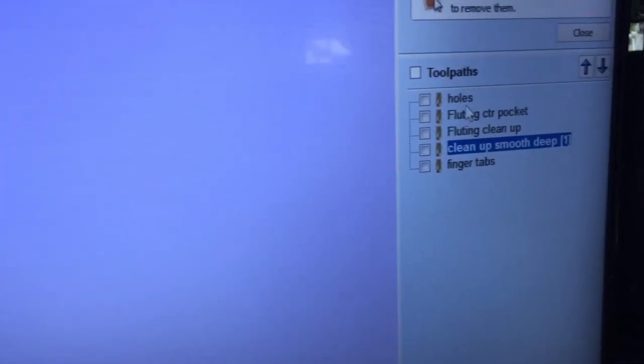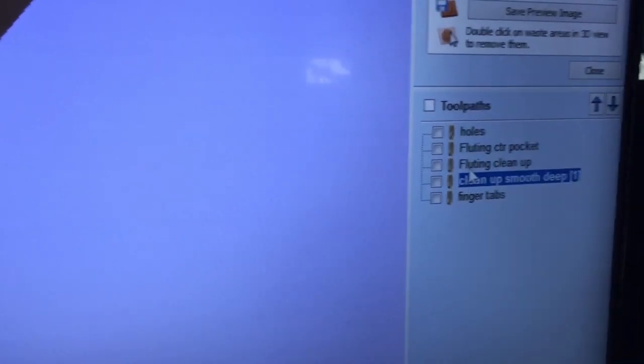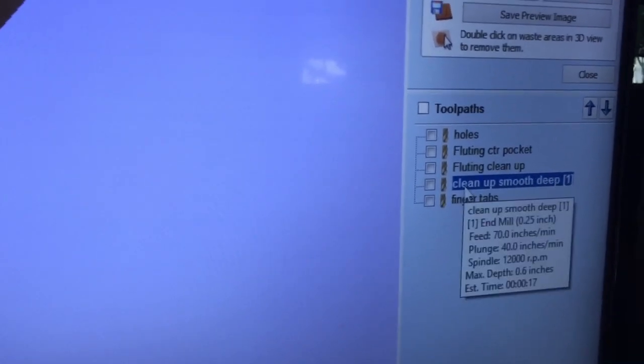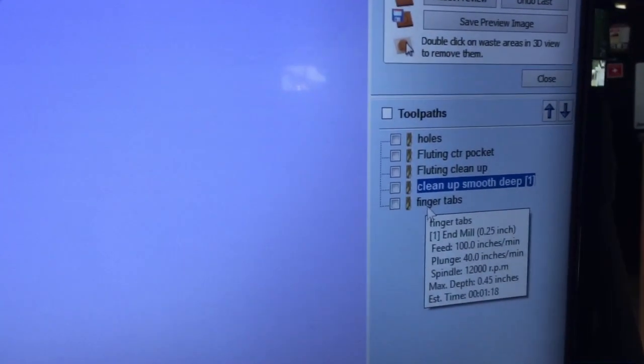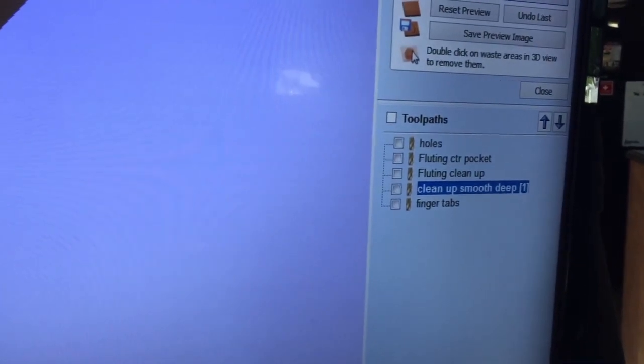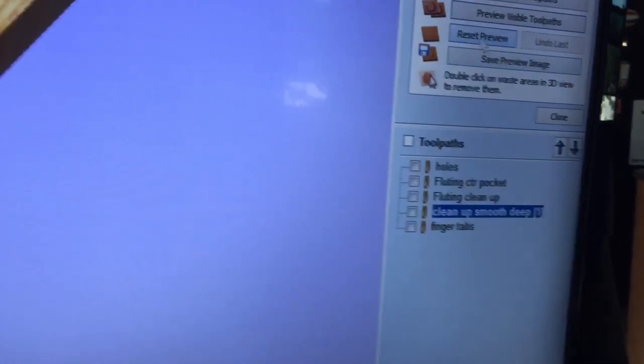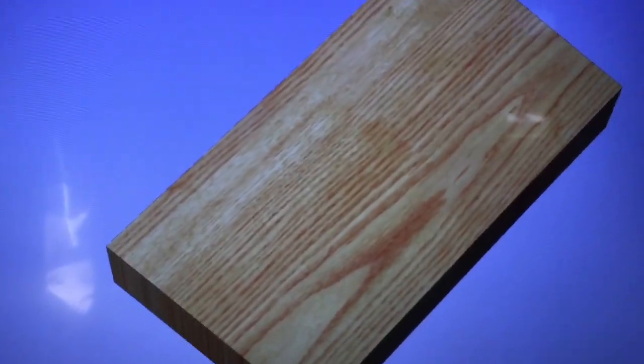I do my holes first, then I do my flute, and then I do my flute cleanup, and then the end cleanup, and then I cut my finger tabs. Those are the orders that I do it in. In fact, you can see that if I reset the preview and I preview all toolpaths...